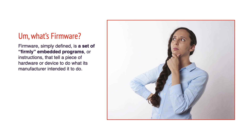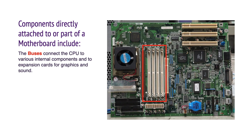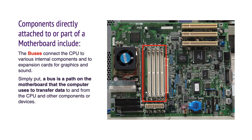Firmware, simply defined, is a set of firmly embedded programs or instructions that tell a piece of hardware or device to do what the manufacturer intended it to do. The instructions that tell a simple traffic light to change from red to green at regular intervals is an example of firmware. Buses connect the CPU to various internal components and to expansion cards for graphics and sound. Simply put, a bus is a path on the motherboard that the computer uses to transfer data to and from the CPU and other components or devices.